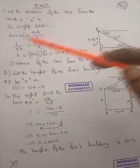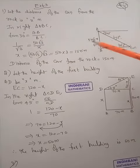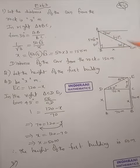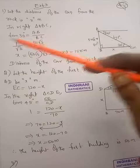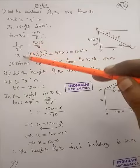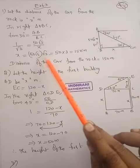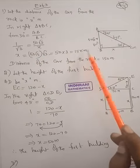Tan 30 is 1 by root 3 equals AB which is 50 root 3 by BC. BC is x. When x goes to the left, root 3 comes up. So x equals 50 root 3 into root 3. 50 into root 3 into root 3 is 3, that is 150 meters.